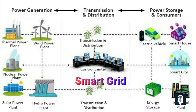Smart grids also enable demand response programs, allowing consumers to actively participate in the grid's balancing act. Through smart meters and real-time data, consumers can adjust their electricity usage based on price signals or grid conditions. This flexibility helps balance the grid during peak demand periods and reduces the need for additional generation capacity.